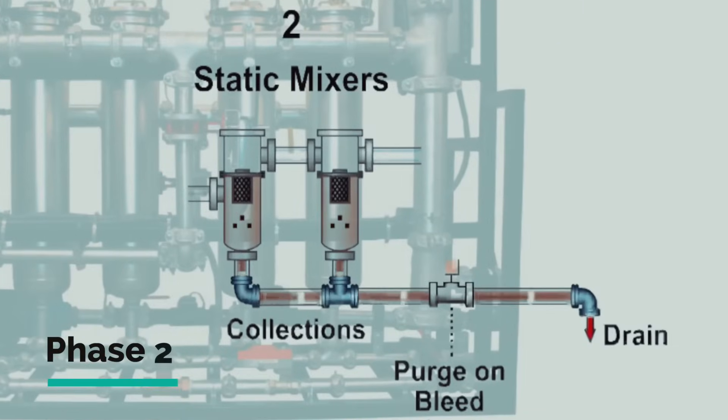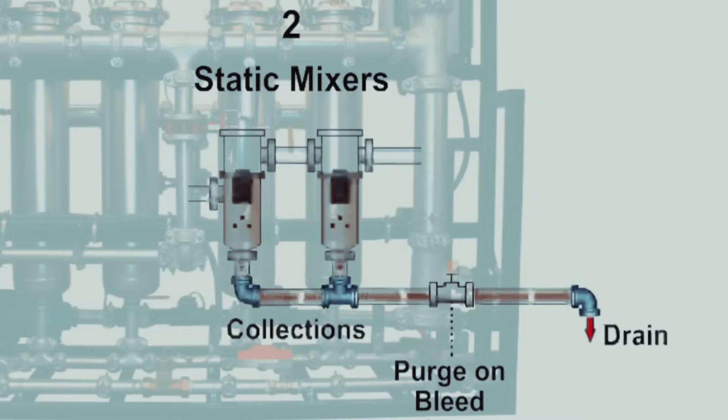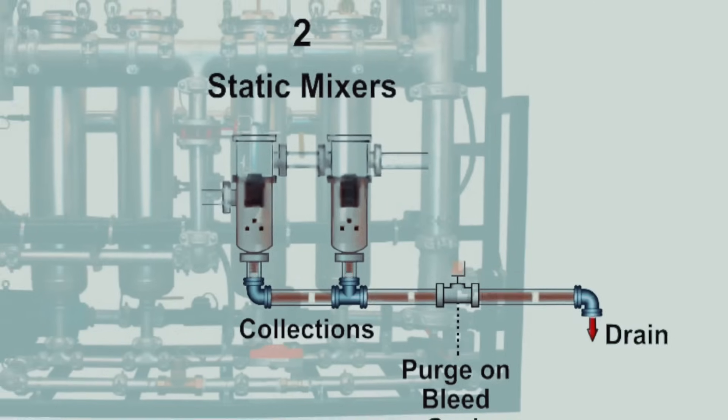Phase 2 is the static mixer debris removal process. The smaller suspended particles have now grown larger to a critical mass, causing them to precipitate into static mixers by gravity. These coagulated solids precipitate through a steel mesh media to the bottom of the static mixer vessels and are later purged to drain during regular system bleed cycles.